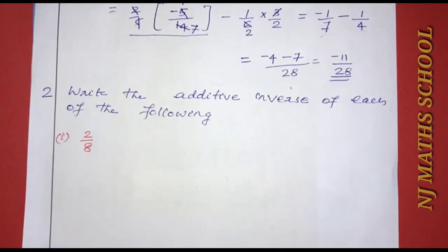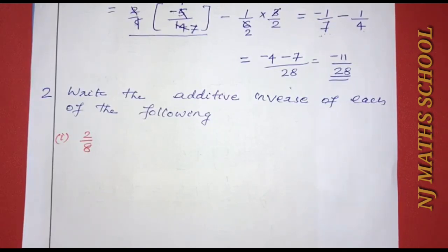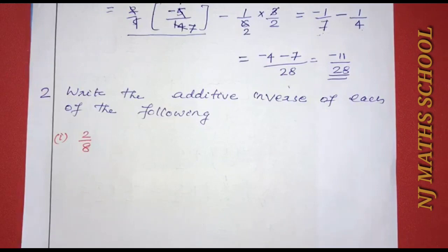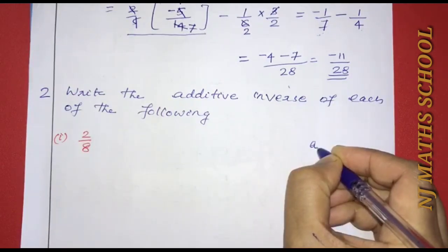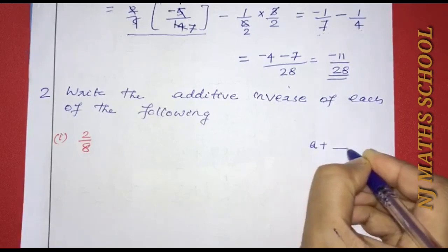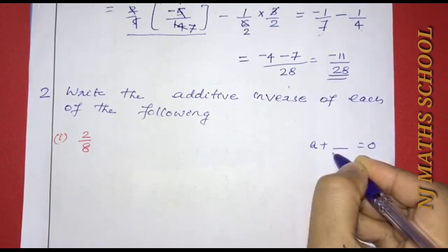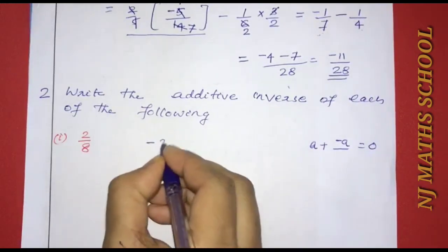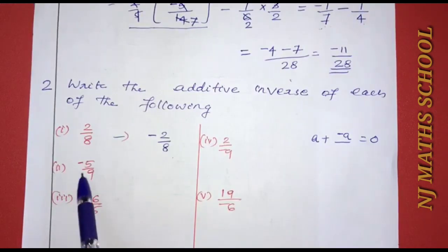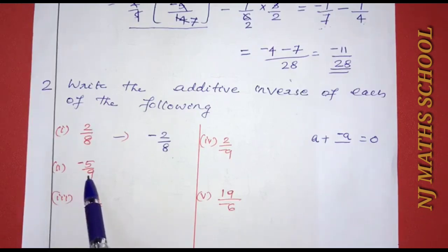Next question: write the additive inverse of each of the following. The additive inverse of a number is obtained by negating it. For negative 2 by 8, the additive inverse is 2 by 8. For negative 5 by 9, the additive inverse is 5 by 9.